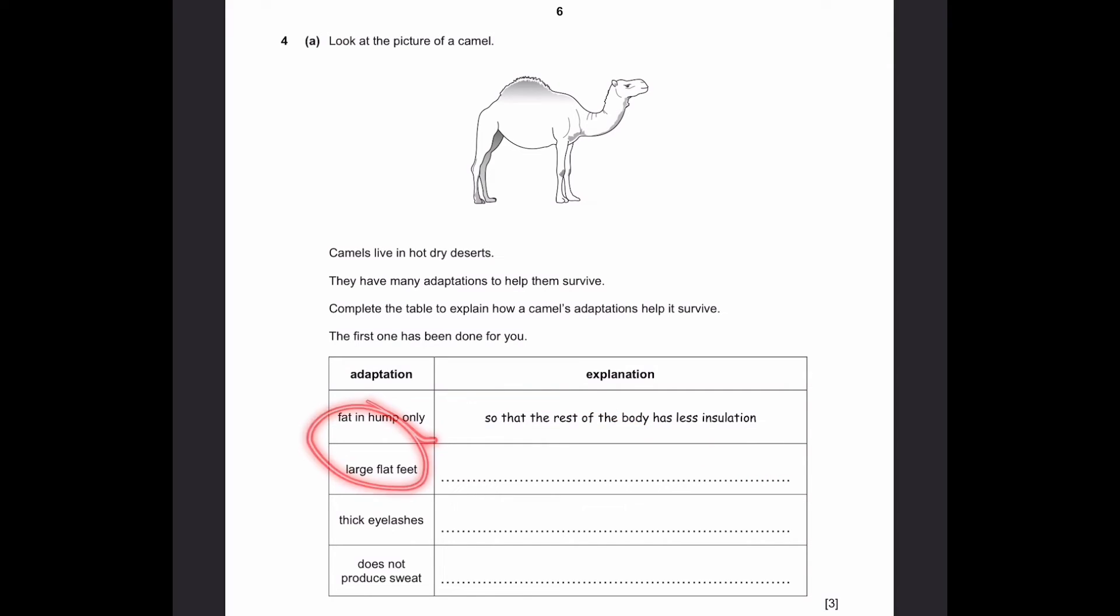Large flat feet. We know for one thing that deserts have a lot of sand, and it's very easy to sink inside the sand, like quicksand for example. Quicksand is very easy to pull you down. But these large flat feet help them to not sink inside the sand.